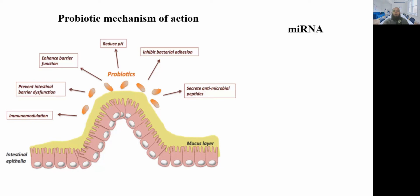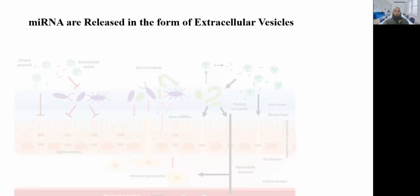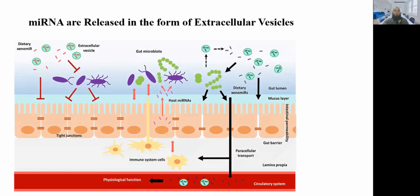miRNA molecules range from 19 to 22 nucleotides. These miRNA molecules are not translated into specific proteins, but they work to enhance or decrease the expression of specific target genes. So how is miRNA released? miRNA is released in the form of extracellular vesicles.